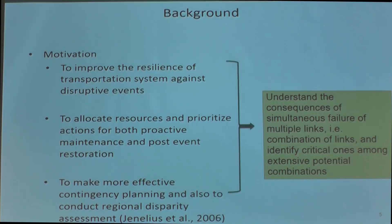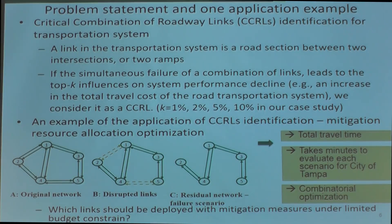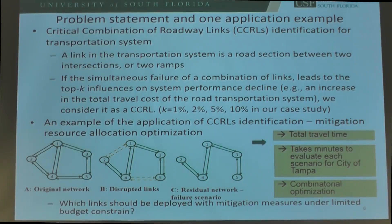We are trying to identify the critical combinations, as there could be extensively many potential combinations, especially for a large network. We define this problem as the critical combination of roadway links identification for transportation systems, which we name CCRLS for convenience.